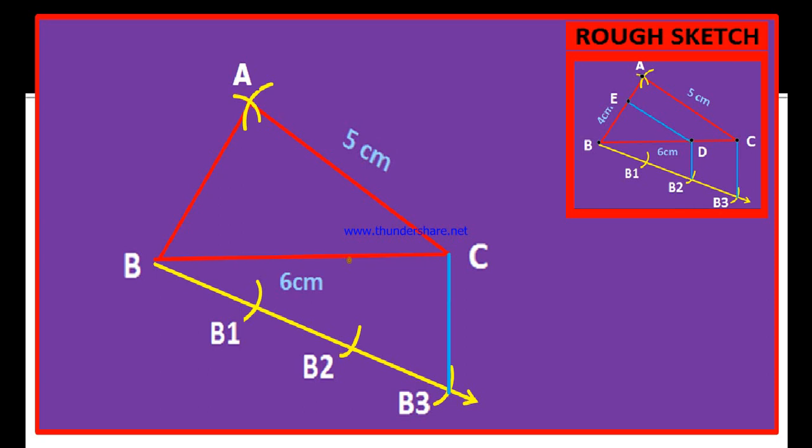Therefore, let us draw a line passing through B2 and parallel to B3 to C. Now, this line cut BC at this point. Let us name this point as D.